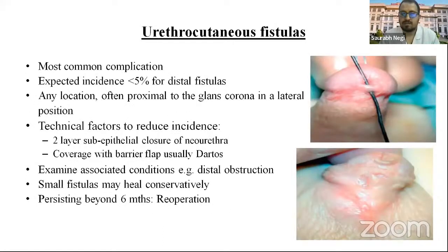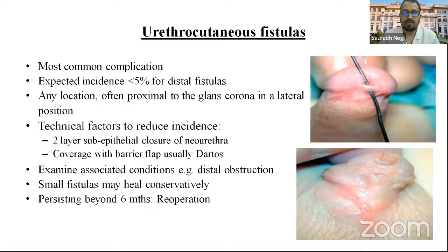Urethrocutaneous fistula is the most common complication. Expected incidence is less than 5% for distal fistulas. Technical factors to reduce incidence include two-layer sub-epithelial closure of the neo-urethra, coverage with a barrier flap — usually dartos — and examination for distal obstruction. Small fistulas may heal conservatively. Persisting fistula beyond six months requires re-operation.